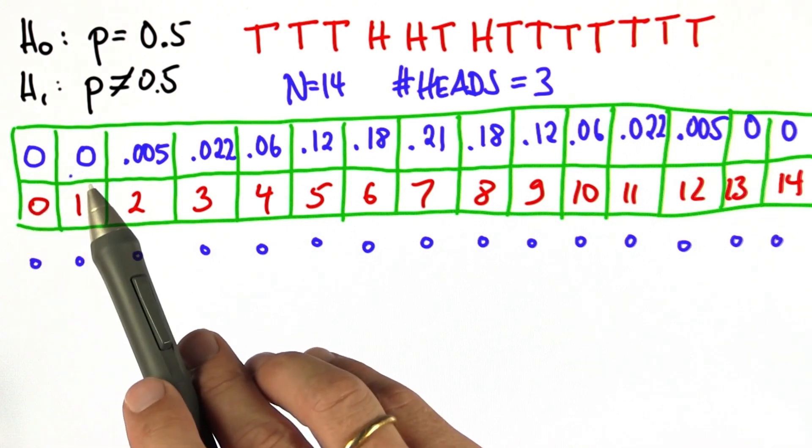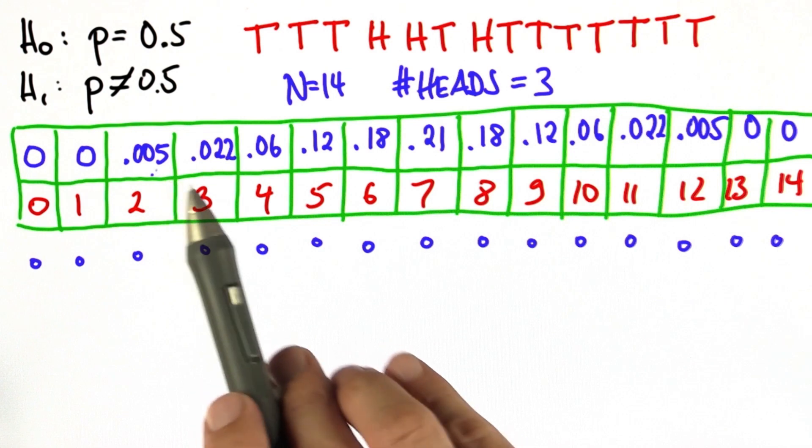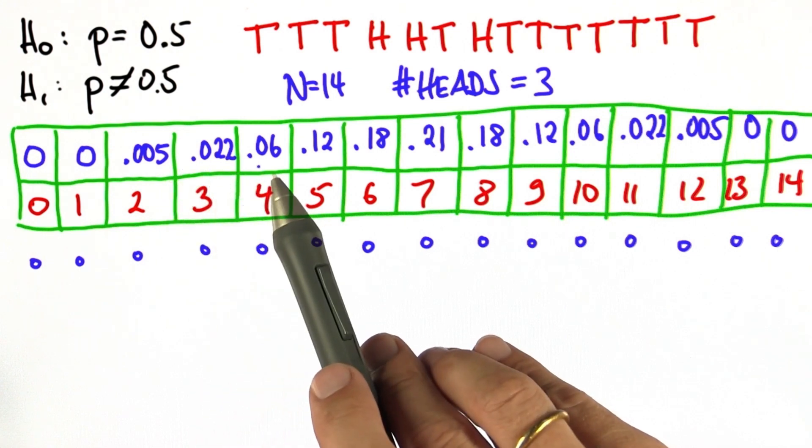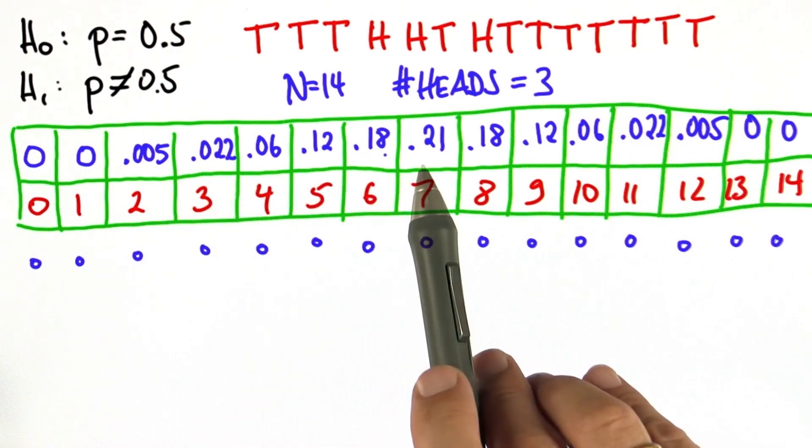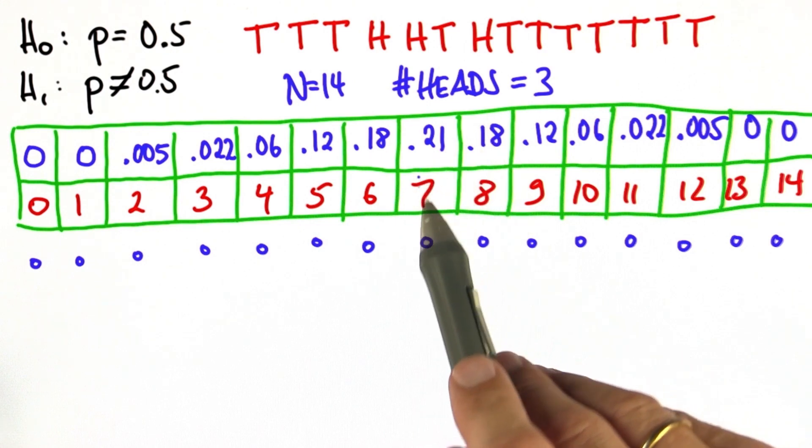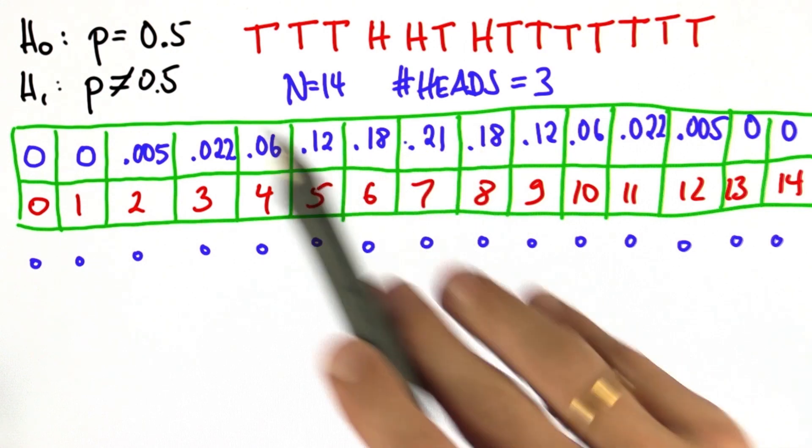And it goes 0, 0, .005, .022, .06, .12, .18, .21. This is obviously the most likely outcome for the null hypothesis.